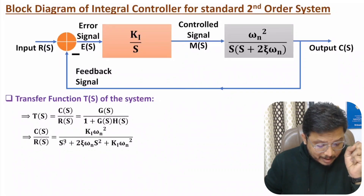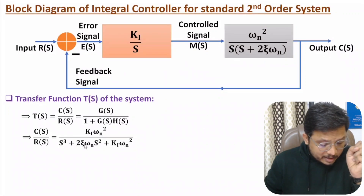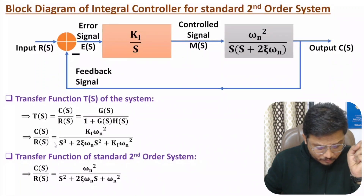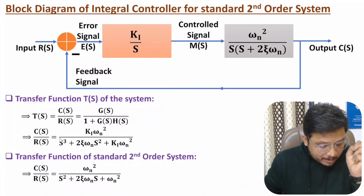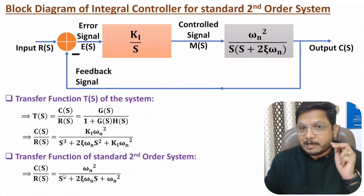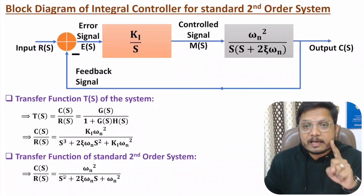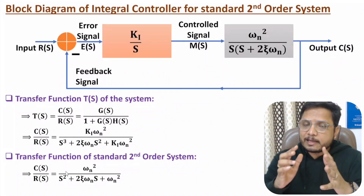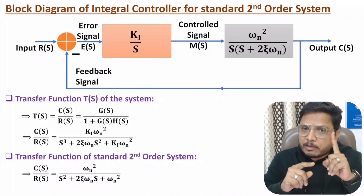Substituting the values, the transfer function C(s)/R(s) equals Ki times omega_n squared divided by s cubed plus 2 zeta omega_n s squared plus Ki times omega_n squared. Comparing this with the standard second-order system transfer function, you can notice that with the integral controller the denominator power is s cubed, while a standard second-order system has s squared — meaning the integral controller adds one pole to the system.